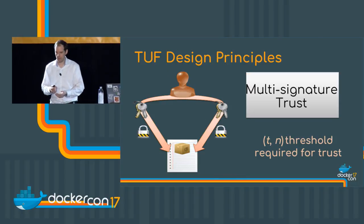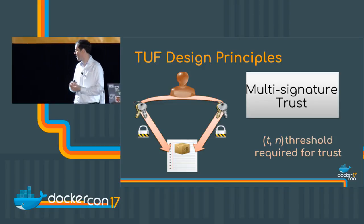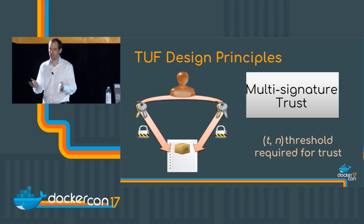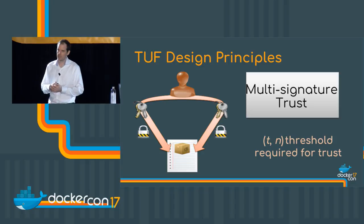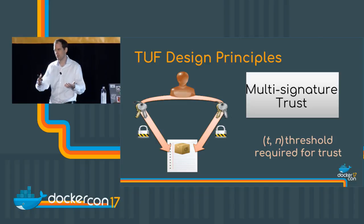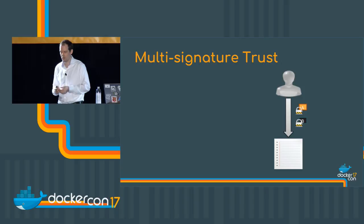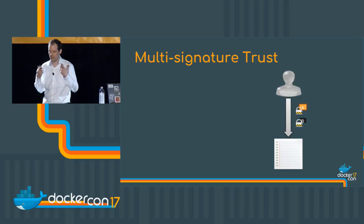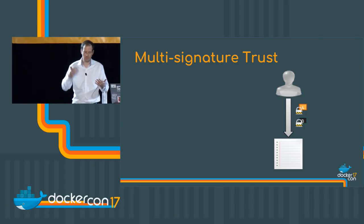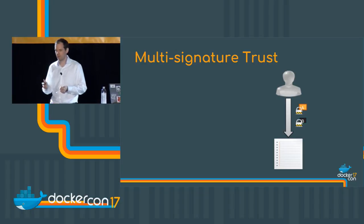The third design principle is multi-signature trust — multiple people potentially have to come together to perform an action. You might require multiple developers to agree that a specific package or container is valid. This is extremely common in TUF deployments for the root of trust, where multiple parties must come together to revoke trust in different keys.